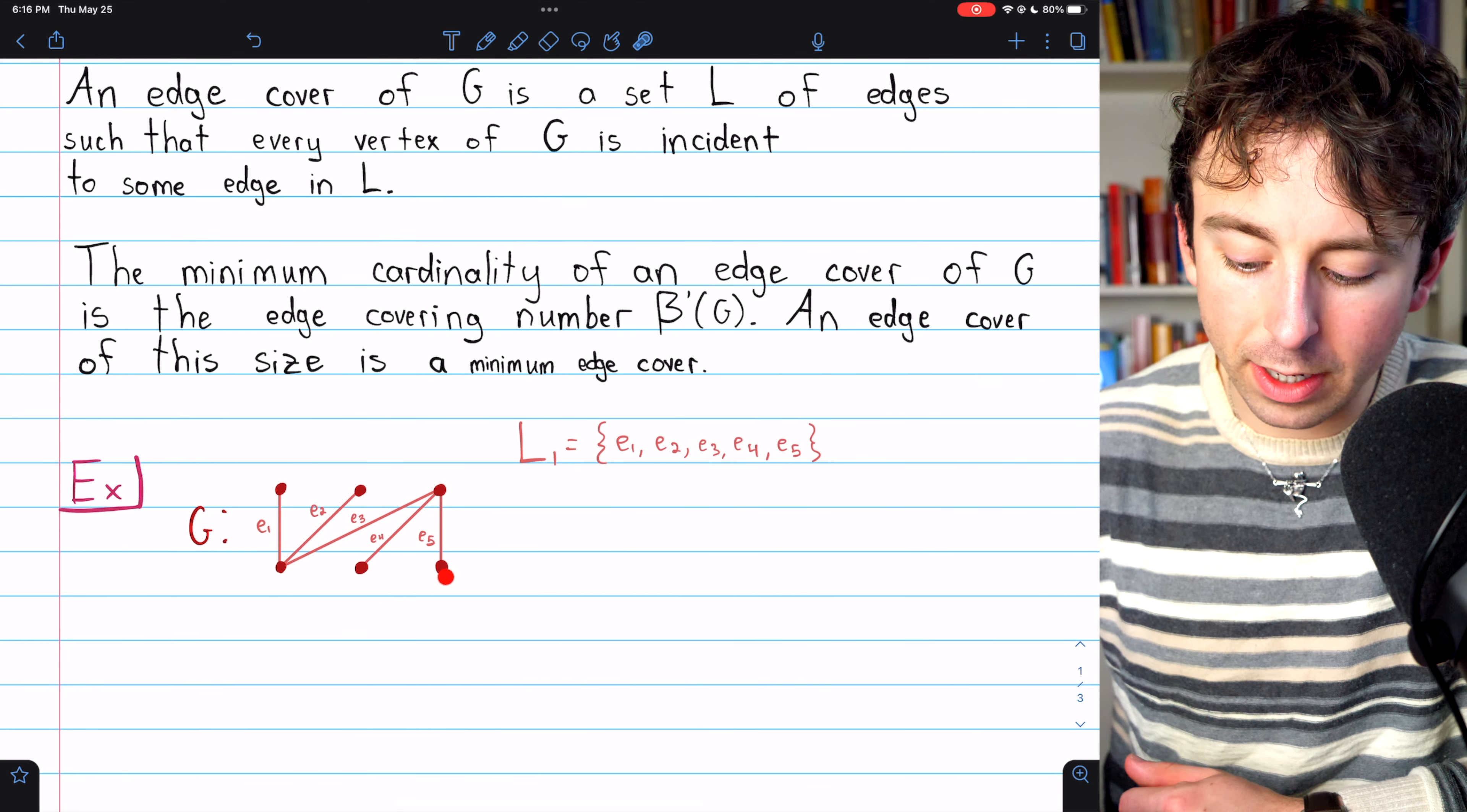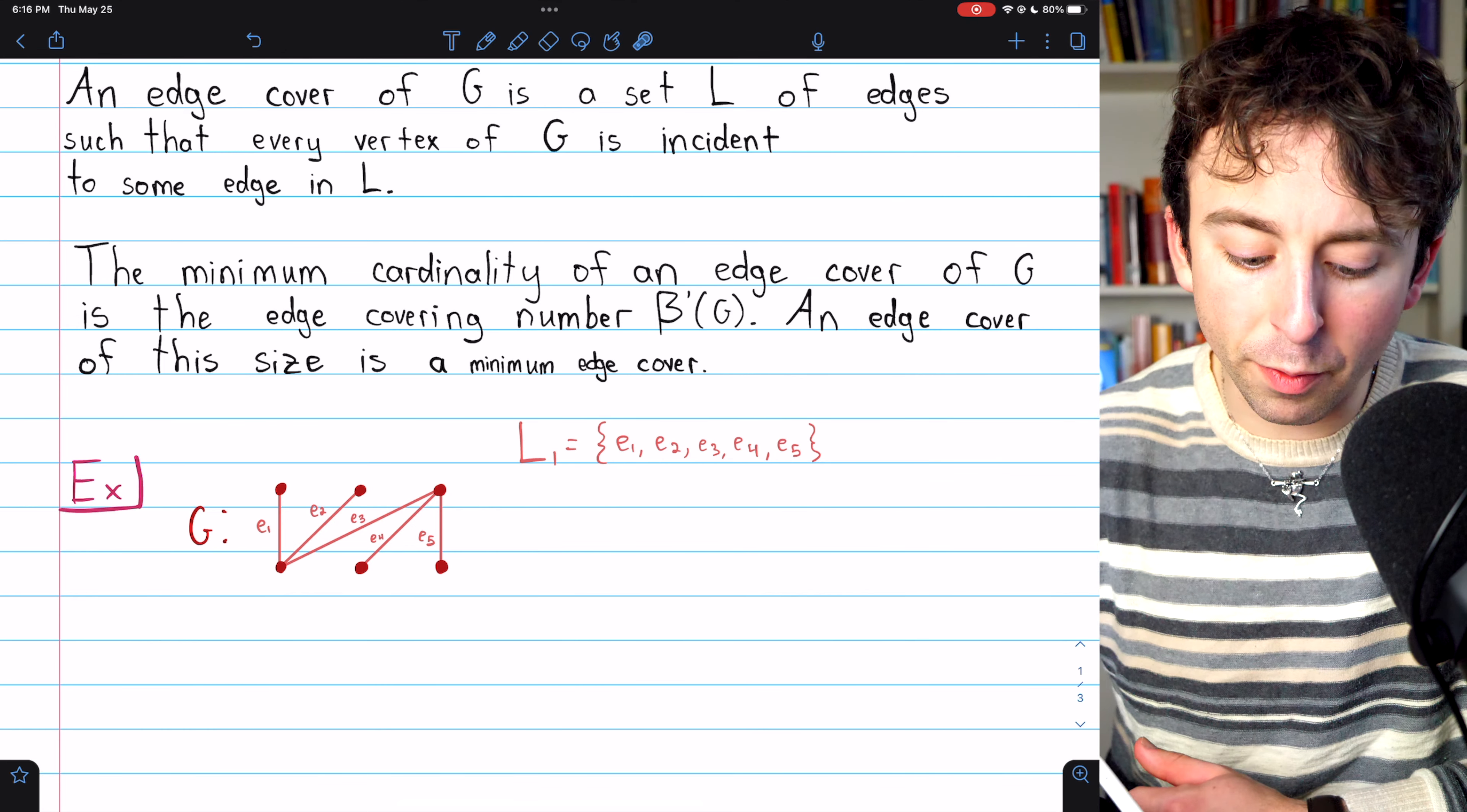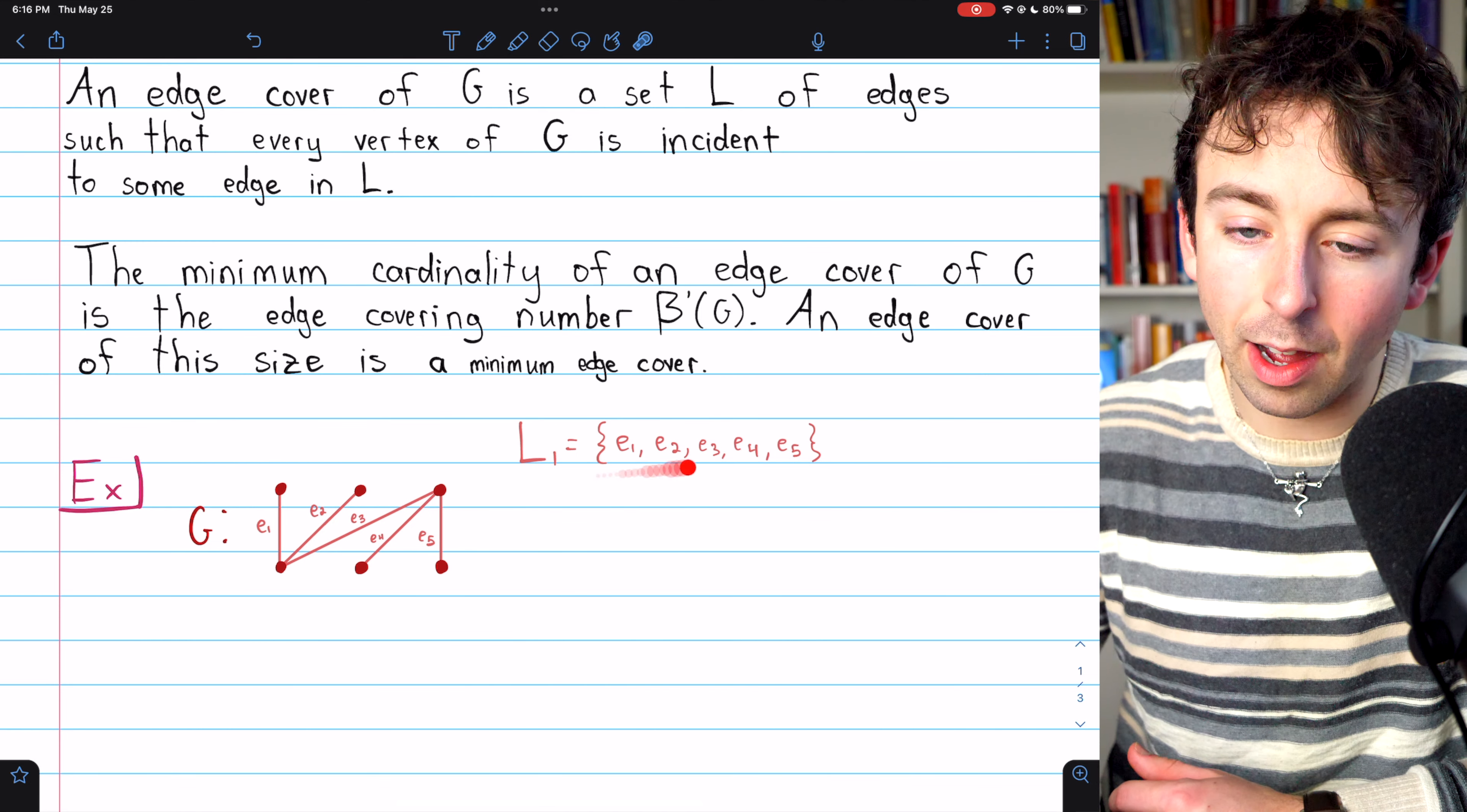This vertex over here is covered by the edge E5. This vertex here is covered by E4, and so on. This is an edge cover of the graph. Every vertex of G is covered by some edge, maybe one, maybe more than one, in this cover L1.